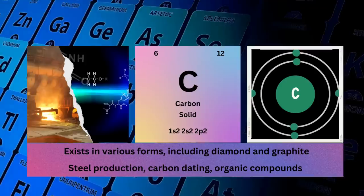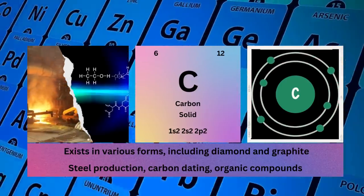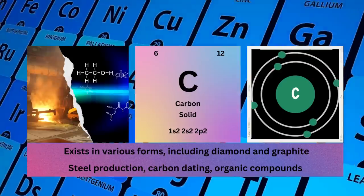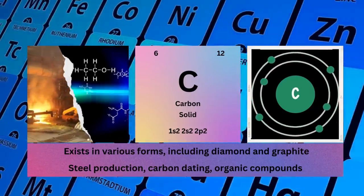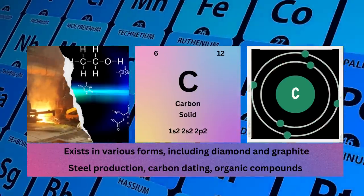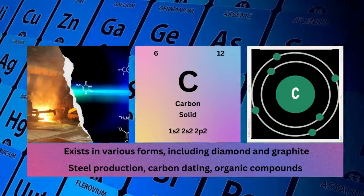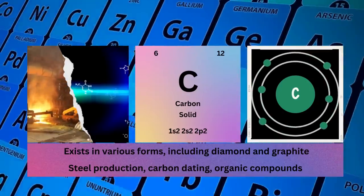Carbon: atomic number 6, mass number 12, symbol C, state solid, electronic configuration 1s2 2s2 2p2. Physical properties: exists in various forms including diamond and graphite. Carbon uses: steel production, carbon dating, and main component of organic compounds. Nitrogen: atomic number 7, mass number 14, symbol N, state gas.